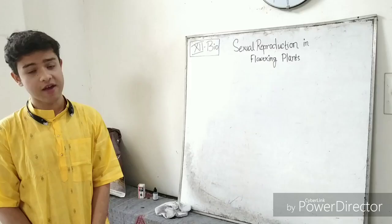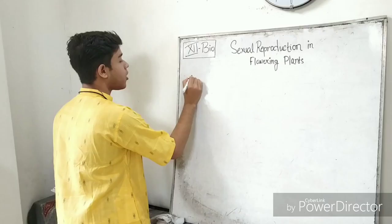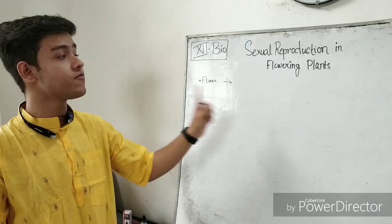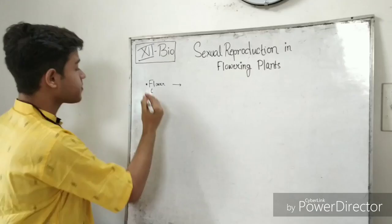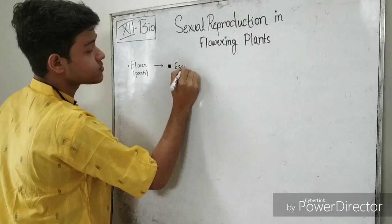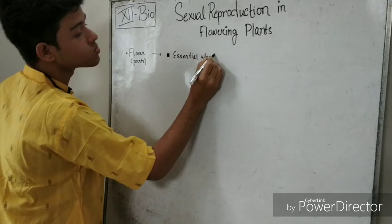So we will be talking about sexual reproduction in flowering plants. What is a flowering plant? A flowering plant belongs to the kingdom Plantae — it bears flowers. Our first topic of discussion would be the flower. Flower is the reproductive unit of a flowering plant. It is a specialized shoot and it has parts. A flower has several parts which can be classified broadly into essential whorls and non-essential whorls.